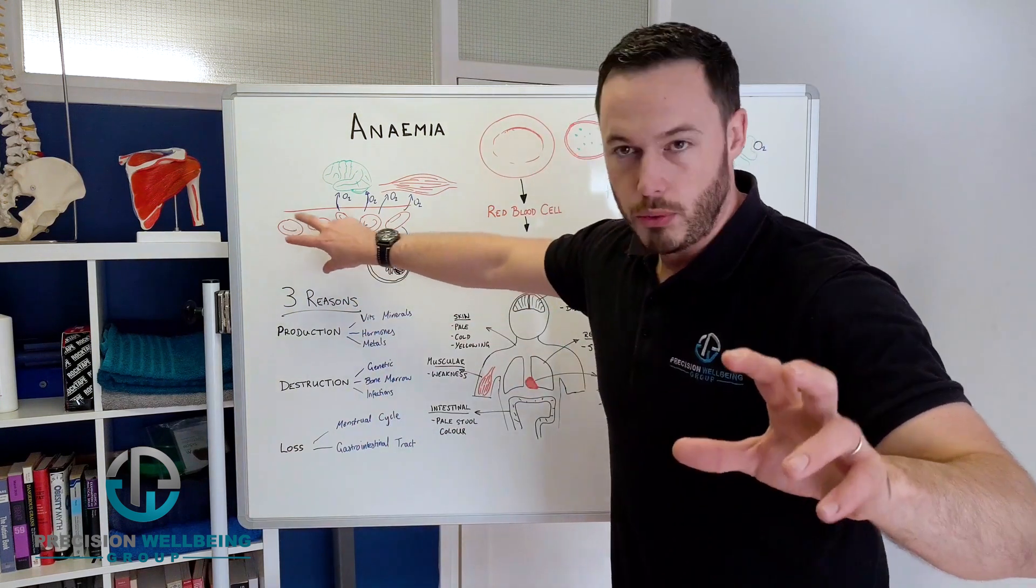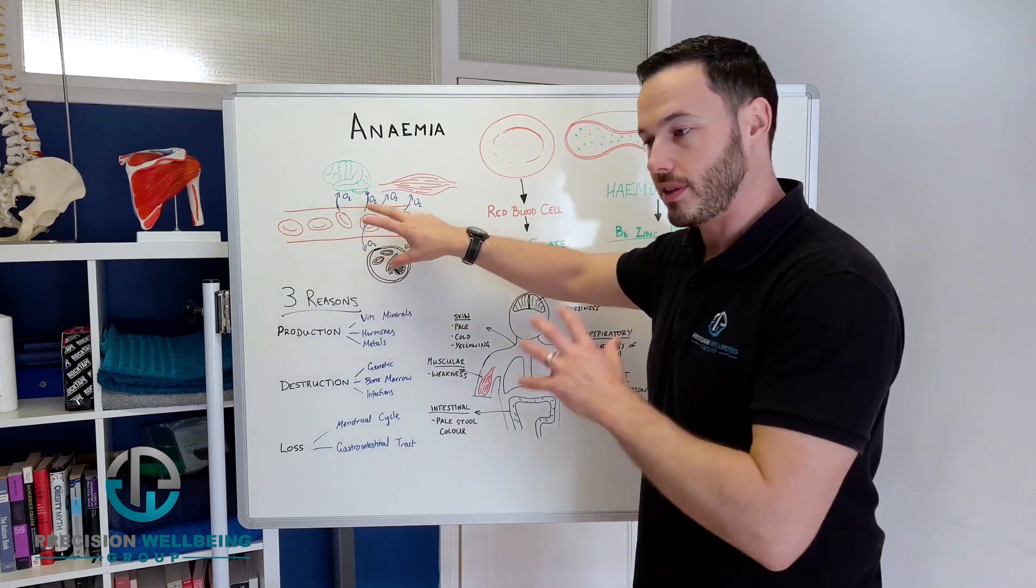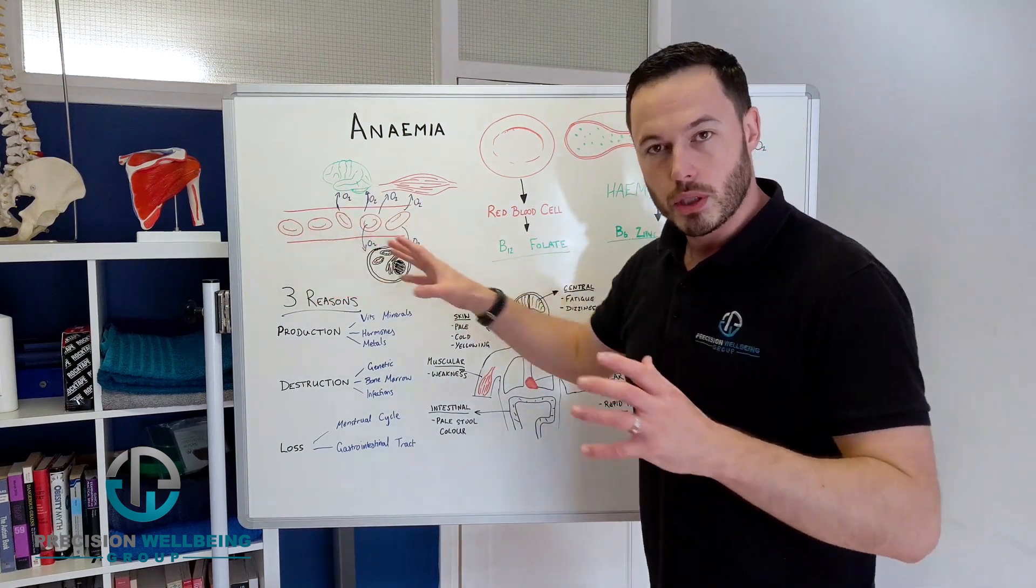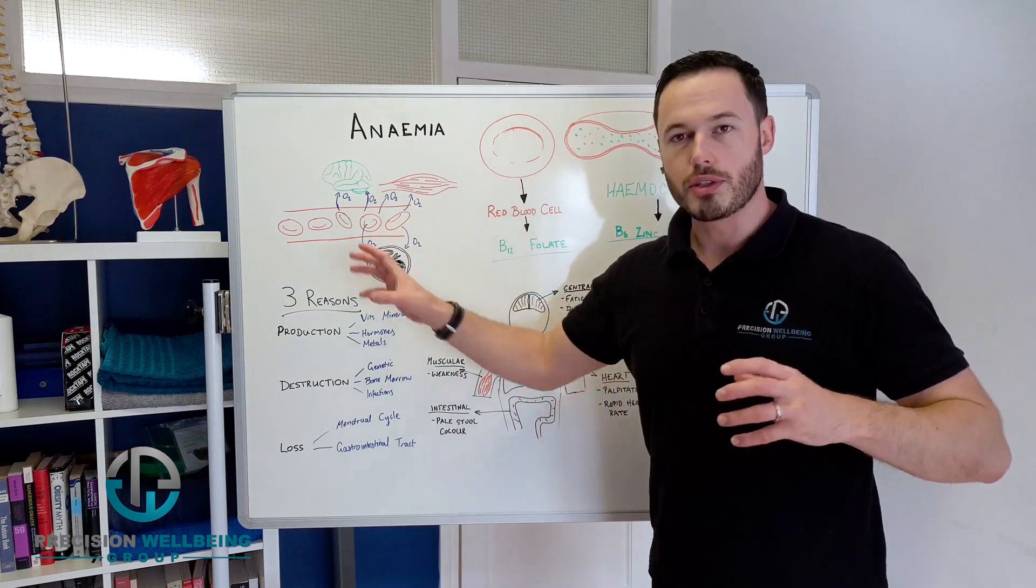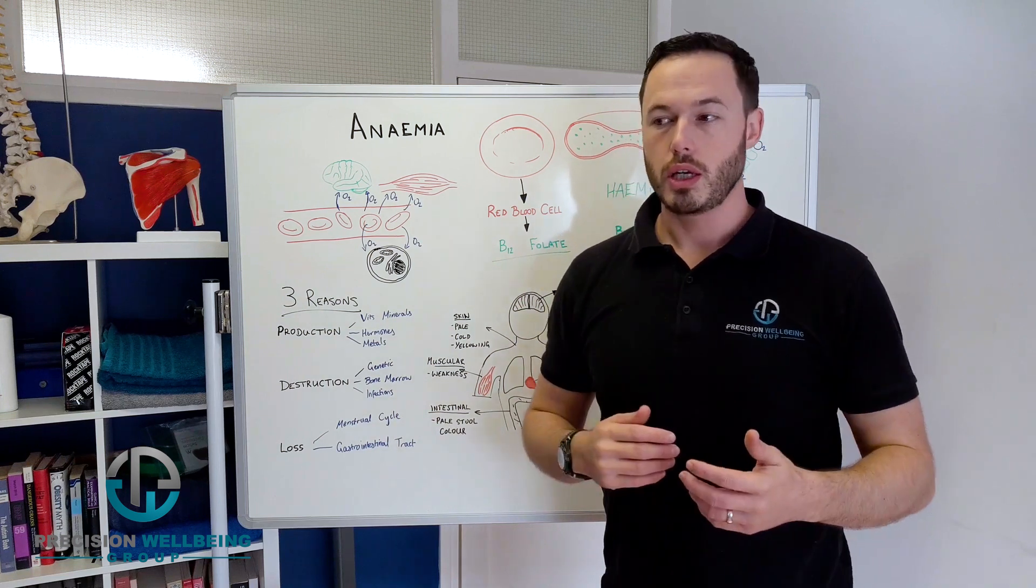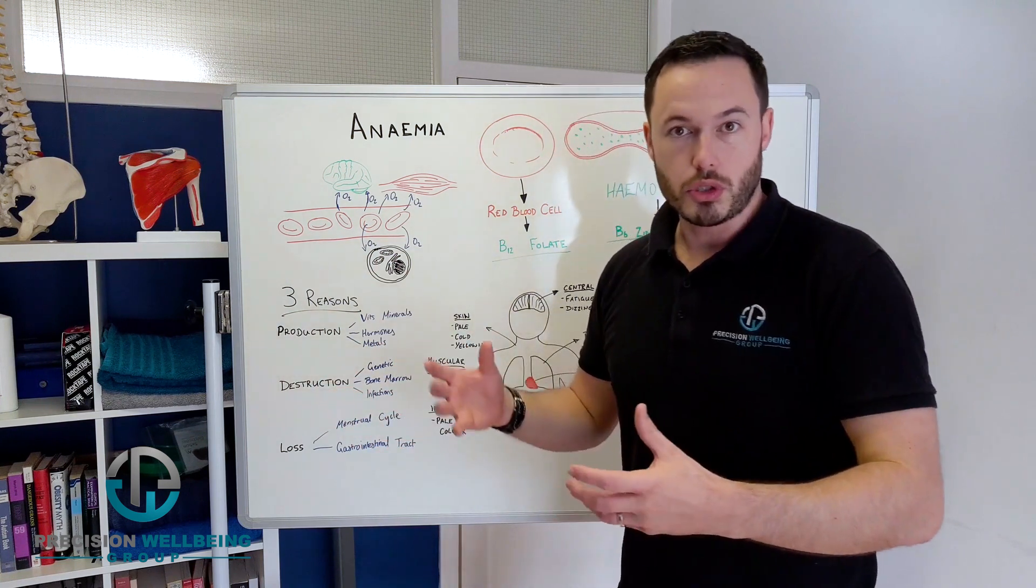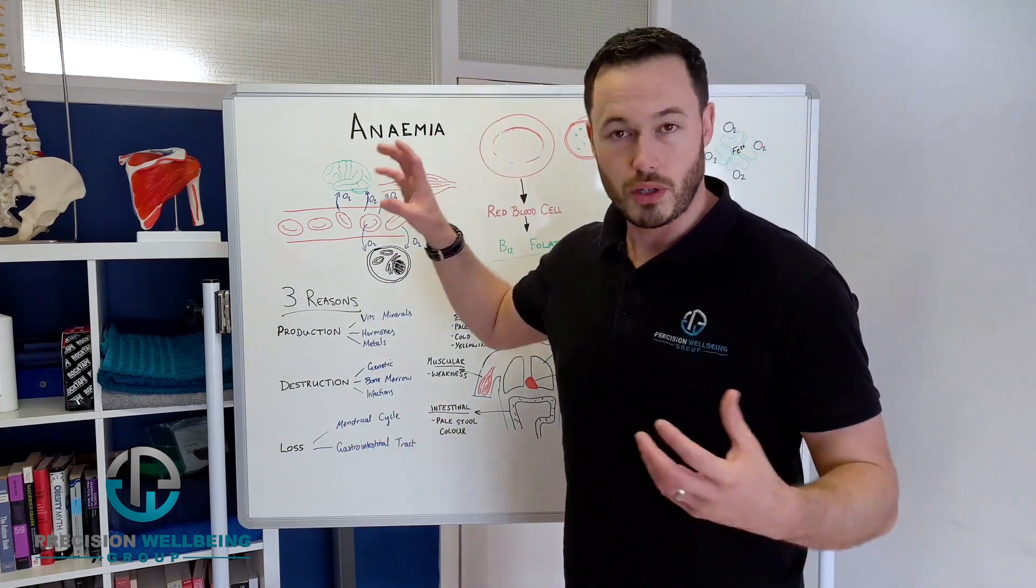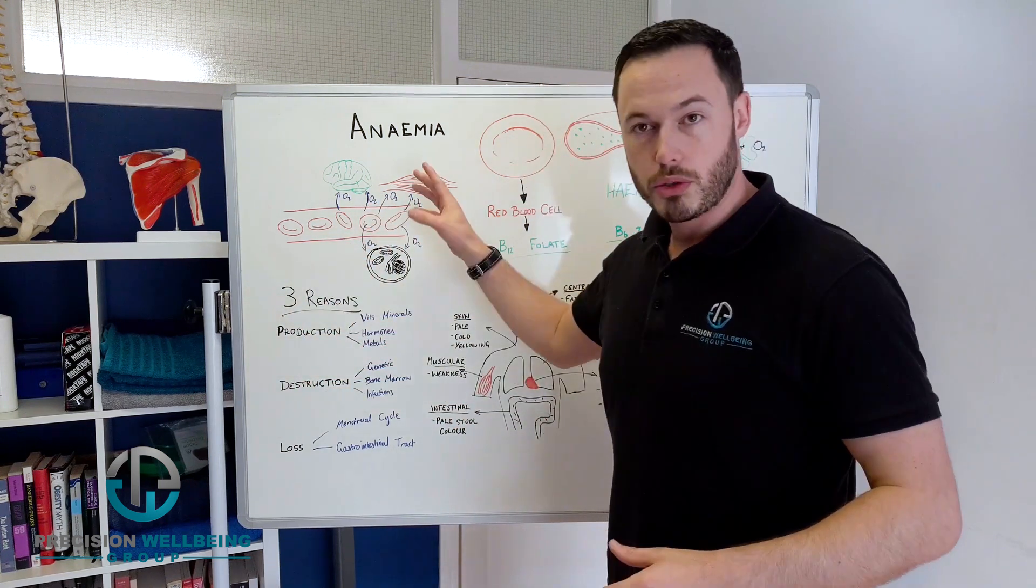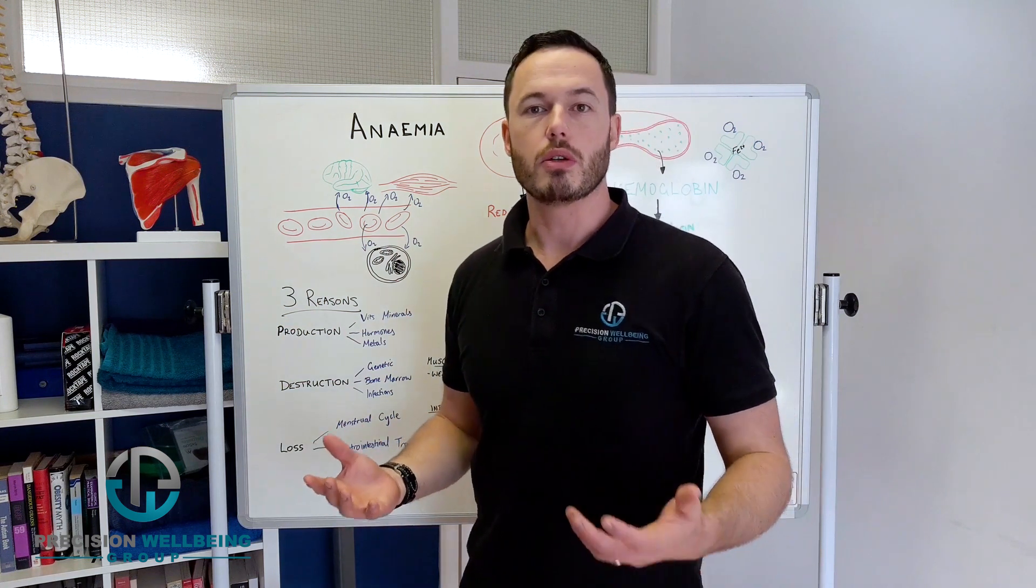So here we have a blood vessel represented with all the little red blood cells within that, and what we can see is that as it's going through the body, those red blood cells are delivering oxygen like a delivery driver delivering your packages. It delivers oxygen to target cells or target organs. As an example, we have the brain - massive consumption of oxygen - we have muscles and cells. Every cell in the body basically needs oxygen.